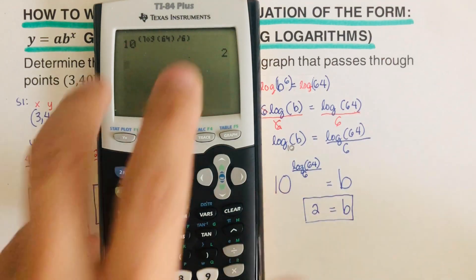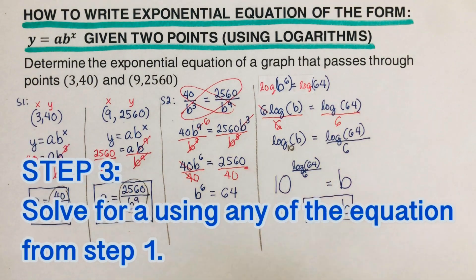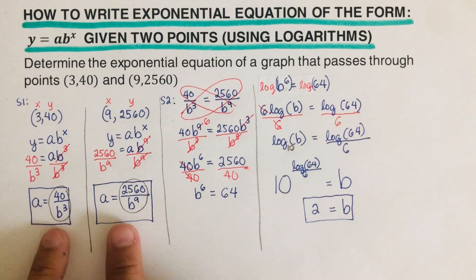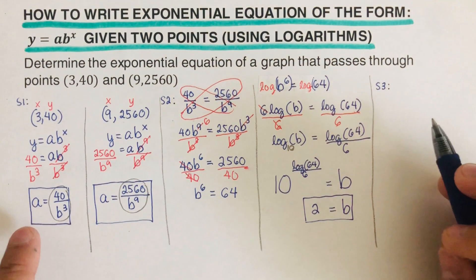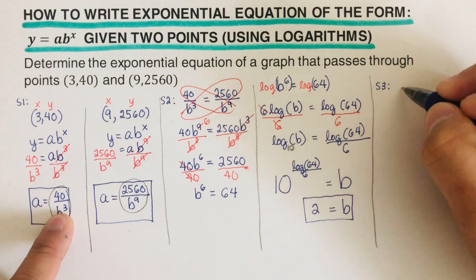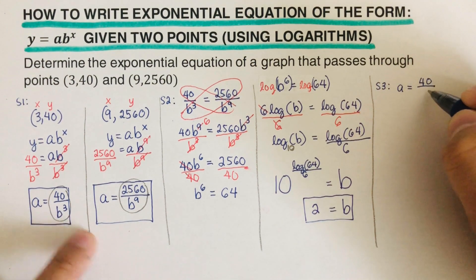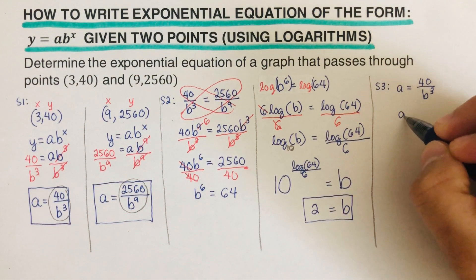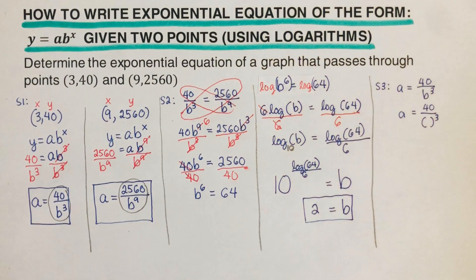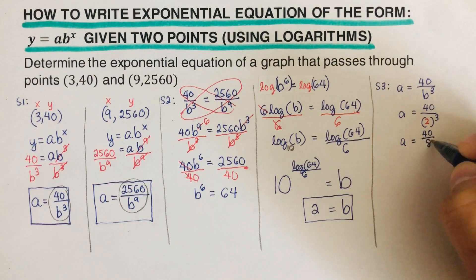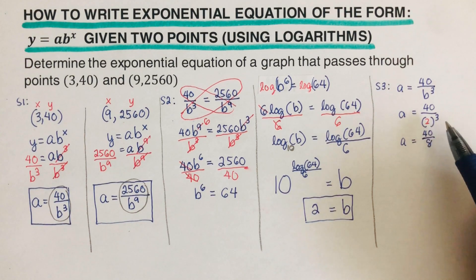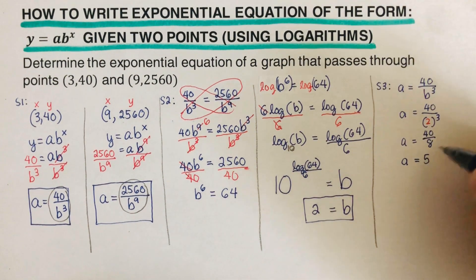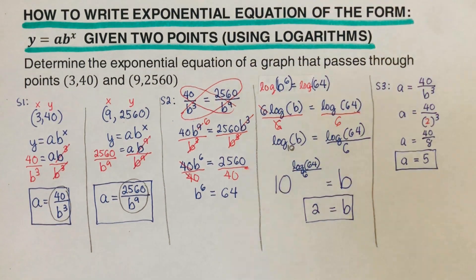We're ready for Step 3: solve for a using one of the equations from Step 1. It's faster to use a equals 40 over b to the third. Substituting b equals 2: 2 to the third power is 2 times 2 times 2, which equals 8. So a equals 40 divided by 8, which gives a equals 5.